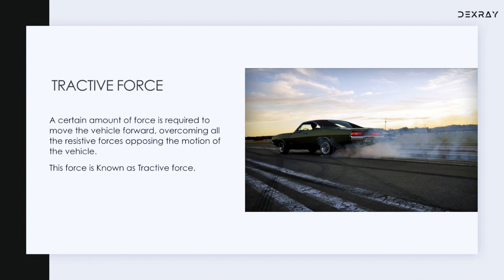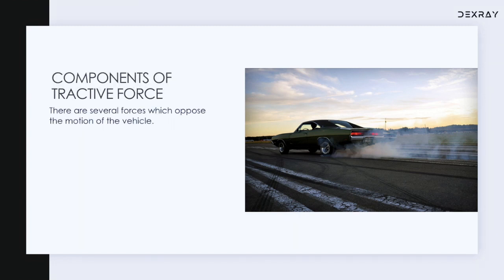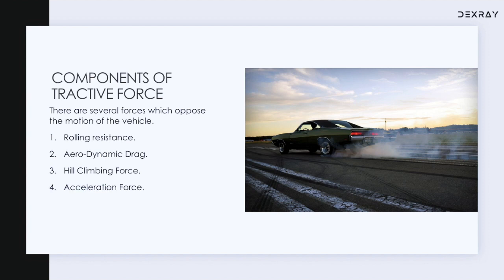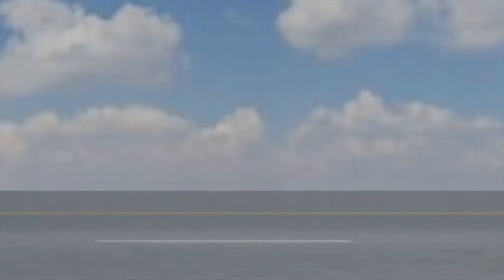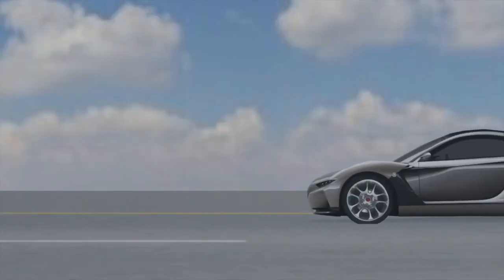After finding the required force, we select a motor by identifying the maximum power required by the vehicle and choose a good motor based upon that factor. To be very precise, the components of tractive force are rolling resistance, aerodynamic drag, hill climbing force, and acceleration force. The acceleration force is divided into two parts: linear acceleration force and angular acceleration force. Now let's go for a ride and analyze each of these forces.